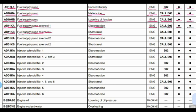Code AD11KB: the part is fuel supply pump solenoid 1 and the problem is a short circuit. Related to the engine controller. Action code E03. Lamp will blink and beep is coming from the buzzer.